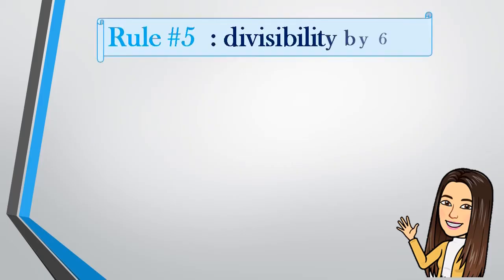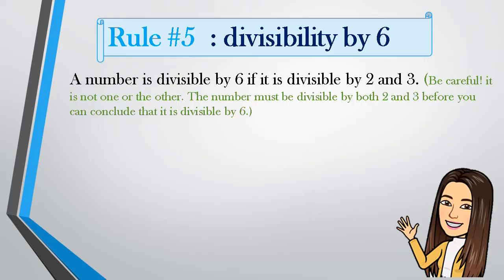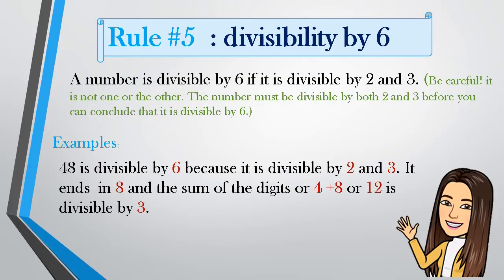Rule number 5: Divisibility by 6. Be careful — it is not one or the other. The number must be divisible by both 2 and 3 before you can conclude that it is divisible by 6. Example: 48 is divisible by 6 because it is divisible by 2 (it ends in 8) and the sum of its digits, 4 plus 8, equals 12, which is divisible by 3. Since it is both divisible by 2 and 3, 48 is divisible by 6.